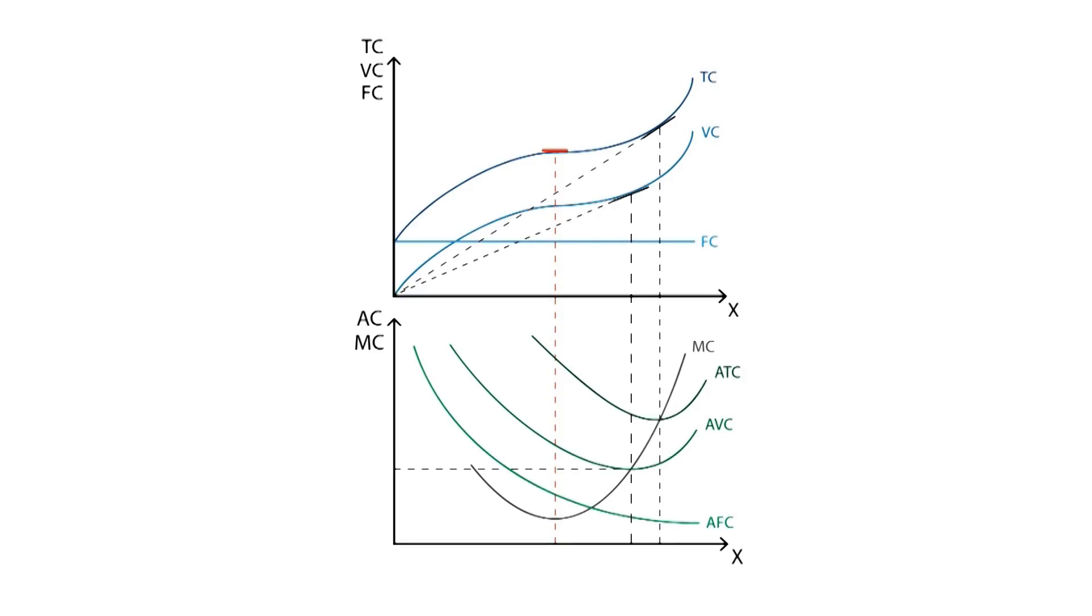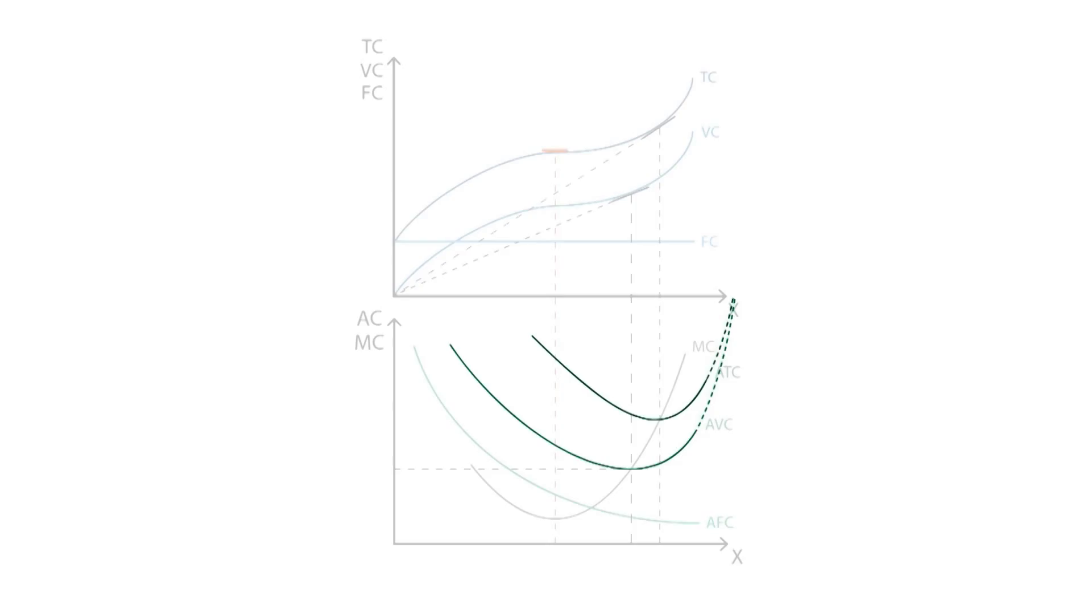It's worth mentioning that the average total cost asymptotically approaches the average variable cost, because fixed costs are distributed amongst a greater number of units produced.